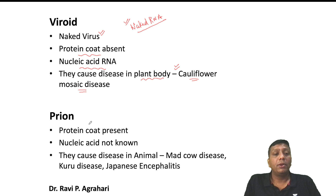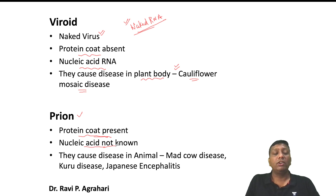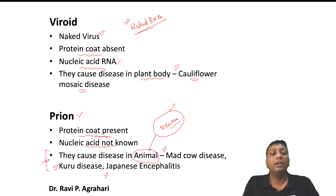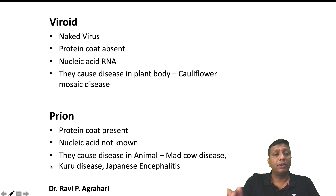Next is the prion — another form of virus. Prions have a protein coat but the nucleic acid is not known. This is exactly the vice versa of viroids: viroids have no protein coat but have RNA; prions have a protein coat but no known nucleic acid. Prions cause diseases in animals and generally affect the nervous system and brain. Prions cause mad cow disease, kuru disease, and Japanese encephalitis — all these diseases affect neurons and the nervous system.